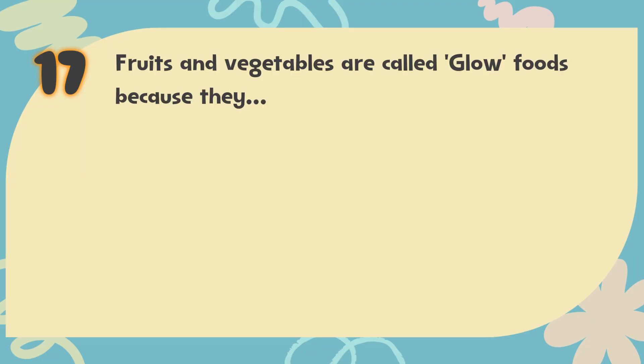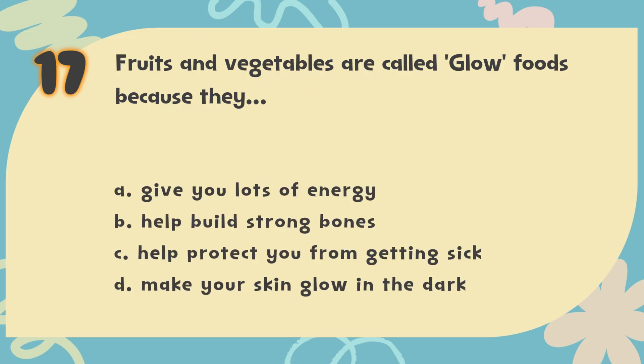Number 17: Fruits and vegetables are called glow foods because they blank. The choices are: A. Give you lots of energy, B. Help build strong bones, C. Help protect you from getting sick, D. Make your skin glow in the dark.